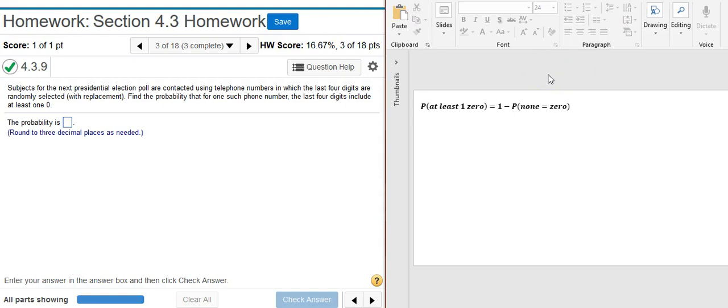Well, what's the probability that none of them are zero? Well, it's the probability that the first number is not zero, and the probability that the second number is not zero, and the probability that the third number is not zero, and the probability that the fourth number is not zero.